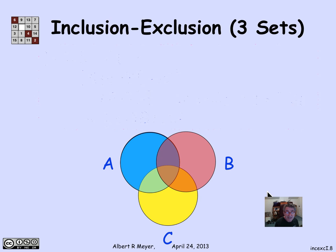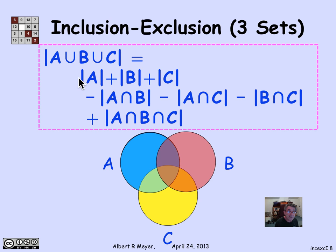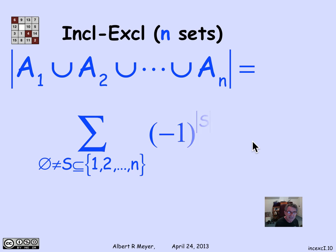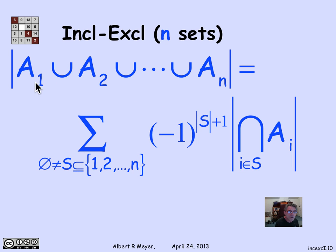Inclusion-exclusion for three sets is the slightly more complicated formula with a sum of intersections of one set, minus the sizes of intersections of two sets, plus the size of the intersection of three sets. This generalizes to a formula for n potentially overlapping sets A1 through An: the size of their union can be expressed as a sum of sizes of intersections.